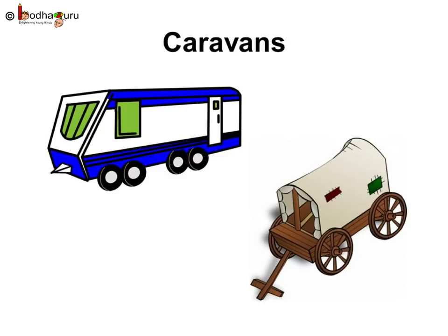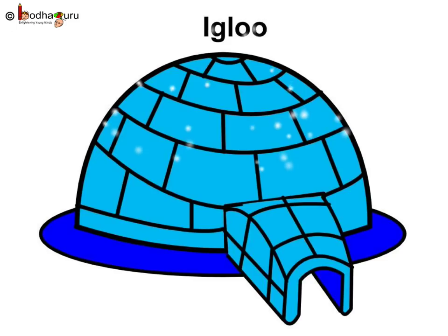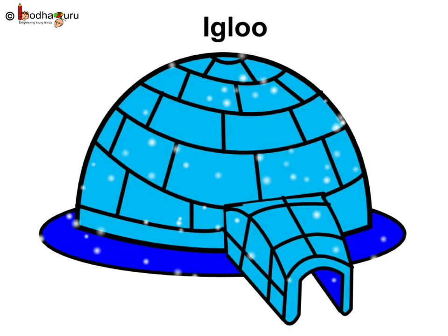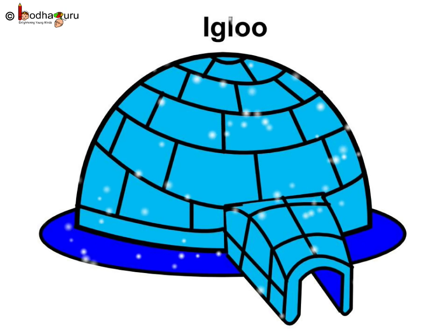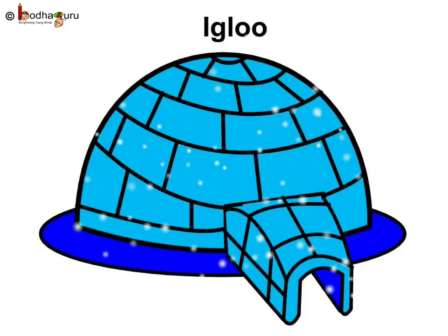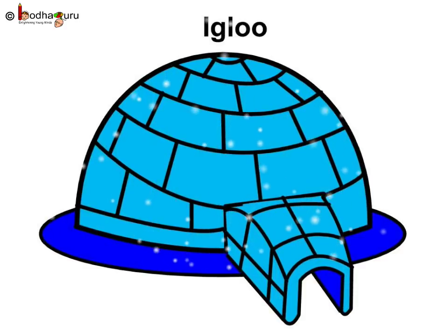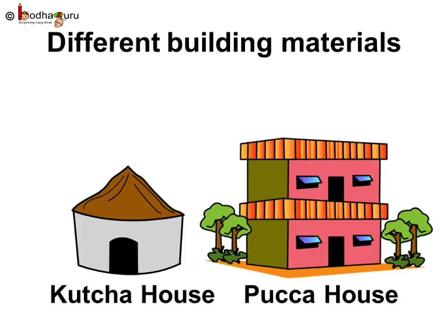We will talk about a very different kind of house. It is built from blocks of hard snow. It is called an igloo. This is a snow house and normally seen in arctic regions. It is usually dome shaped.